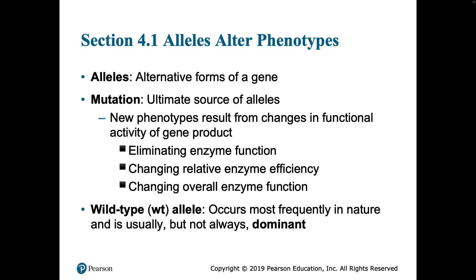When we have an allele that is present at the highest frequency in the population, we say that that is the wild-type allele because the majority of the individuals have it. That does not necessarily mean that it's the dominant allele. For example, in Huntington disease, the dominant allele actually leads to the disease, but the majority of people have the recessive allele — so the wild-type would be the recessive. So it's usually, but not always, dominant.